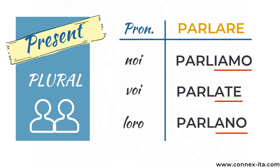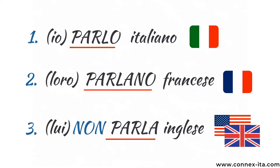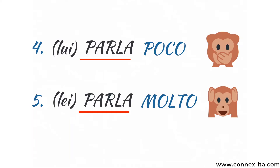Before we move on to the next verb, let me show you some simple examples on how to use PARLARE. You can say parlo followed by the language that you speak. For instance: io parlo italiano, loro parlano francese — meaning I speak Italian and they speak French. If you don't speak a language, add the word non before the verb: lui non parla inglese, meaning he doesn't speak English. You can also use parlare to say if someone is chatty or quiet: lui parla poco means he doesn't talk much, while lei parla molto means she's pretty talkative.